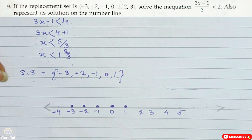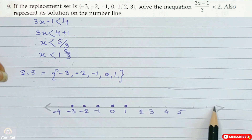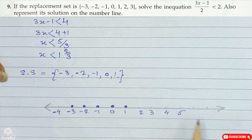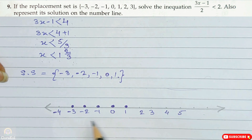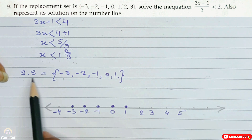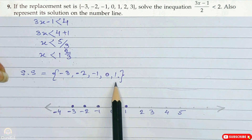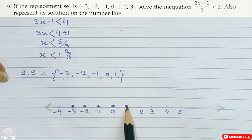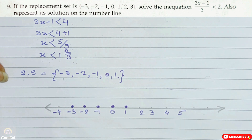Now we show this on the number line. Draw a number line with bold arrows on both sides because it is infinite. Mark positive as well as negative digits. The numbers that belong to our solution set are marked with a bold dot on the number line.